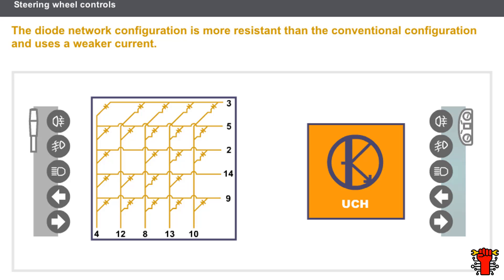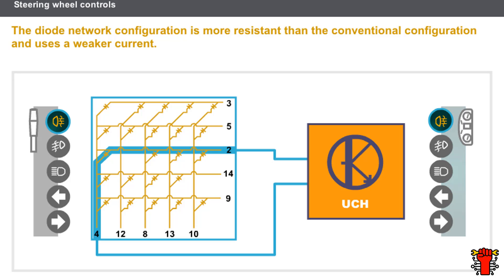The second type is a configuration based on a diode network, which uses a weaker current. This configuration is more resistant than the conventional configuration. When a control is activated, the UCH interprets the path taken in the diode network to activate the consumers.